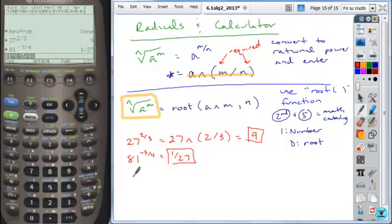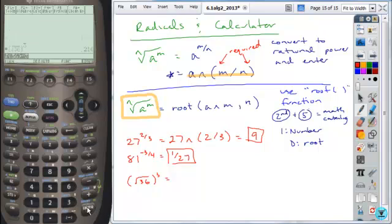And then the final problem in radical form, square root of 36 cubed. And here, we can do our square root, 36, close that off, and cube the whole thing. And when we do, we get 216.